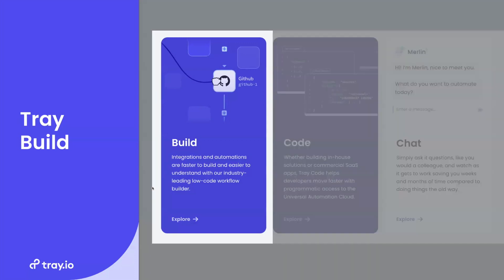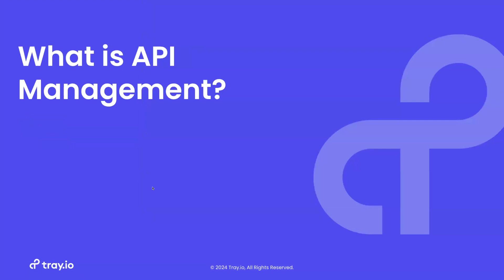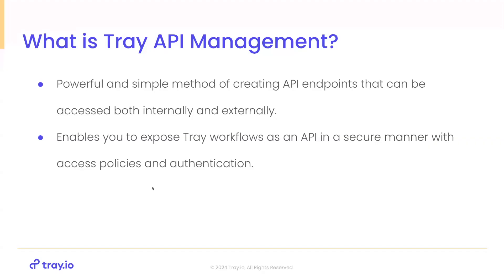When we look specifically at the feature we're here to discuss today around API management, it fits really nicely into the Trace Build space. A lot of what you're going to be doing with API management is taking underlying workflows that you've built using that low-code builder and exposing them fundamentally as an API endpoint. The general idea is that it provides a powerful and simple method of creating API endpoints that can be accessed both internally and externally, enabling you to expose your Trace workflows as an API in a secure manner, combined with access policies and authentication.